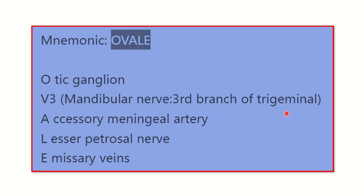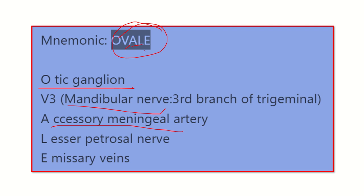There is a mnemonic for the foramen ovale: 'OVALE.' O is for otic ganglion, V is for V3 — the mandibular nerve of the trigeminal nerve, A is for accessory meningeal artery, L is for lesser petrosal nerve, and E is for emissary vein. This mnemonic makes it easy to remember the contents passing through.